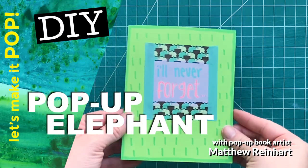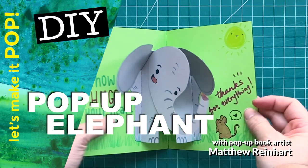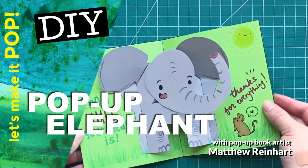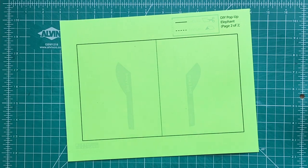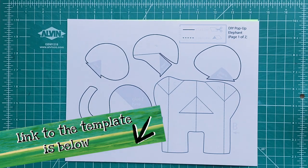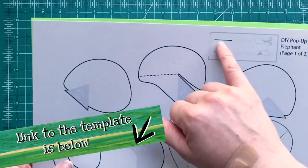Hey everybody, let's make it pop! It's Matthew Reinhart here and today we're gonna make a really cool pop-up elephant. Oh I love elephants, they're my favorite animal in all the world. So let's get started. First we're gonna download the templates for this pop-up onto cardstock. You can use any color you like, there's two pages of them.